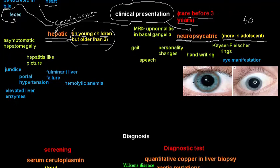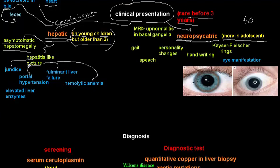Hepatic manifestations include oxidative damage to hepatocytes, asymptomatic hepatomegaly, hepatitis-like picture with jaundice, portal hypertension, fulminant liver failure, hemolytic anemia, and elevated liver enzymes. Essentially any presentation of acute or chronic liver disease can be expected.